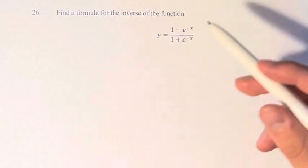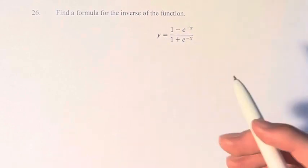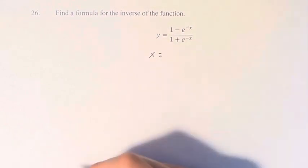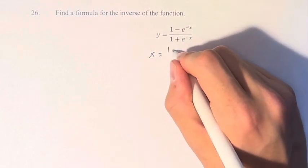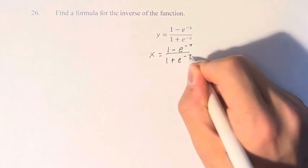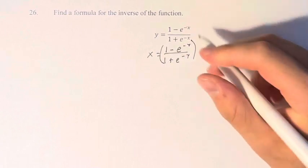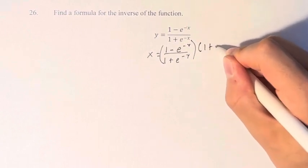So the first thing we can do is replace x's with y's and y's with x's, because that's how we find the inverse. So we have x equals 1 minus e to the negative y over 1 plus e to the negative y. Now we need to solve for y and get it in terms of x.